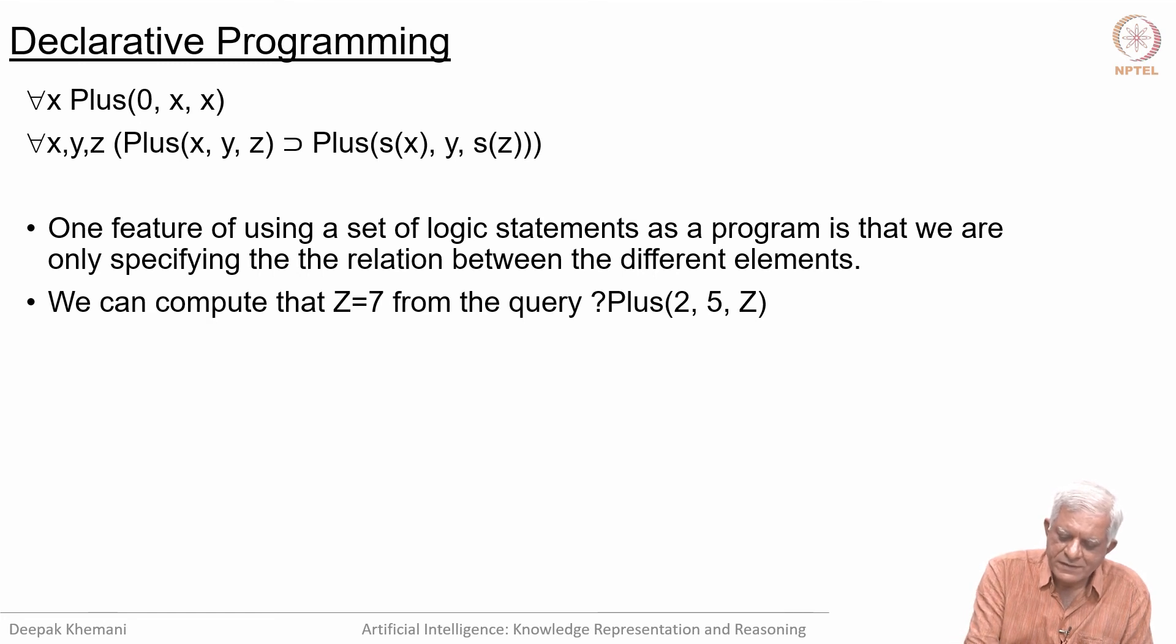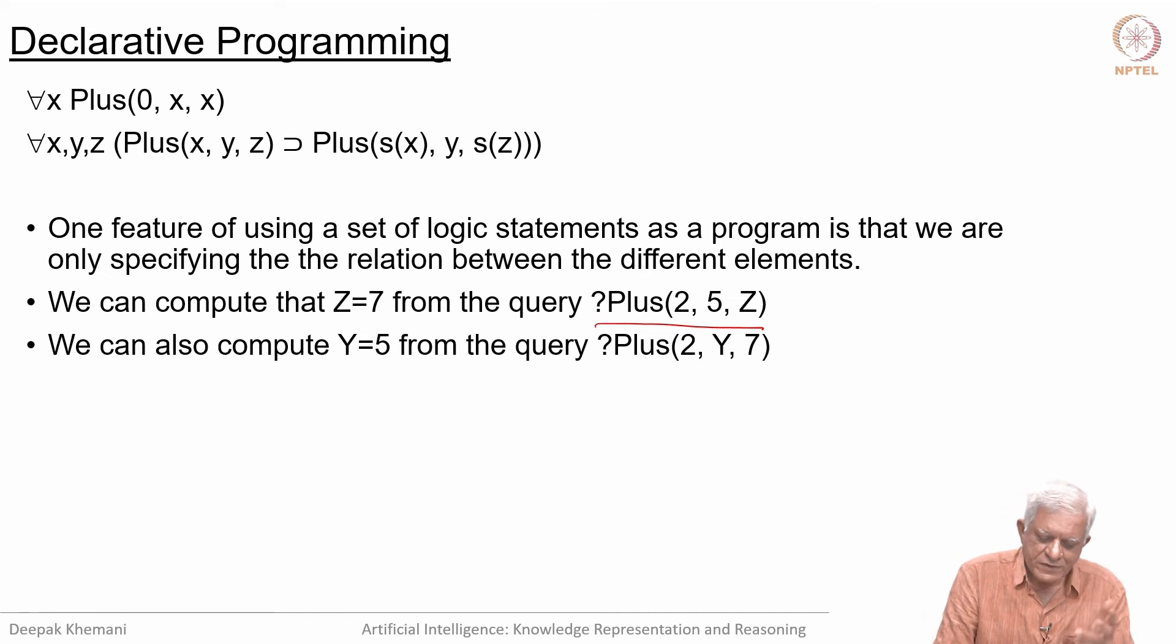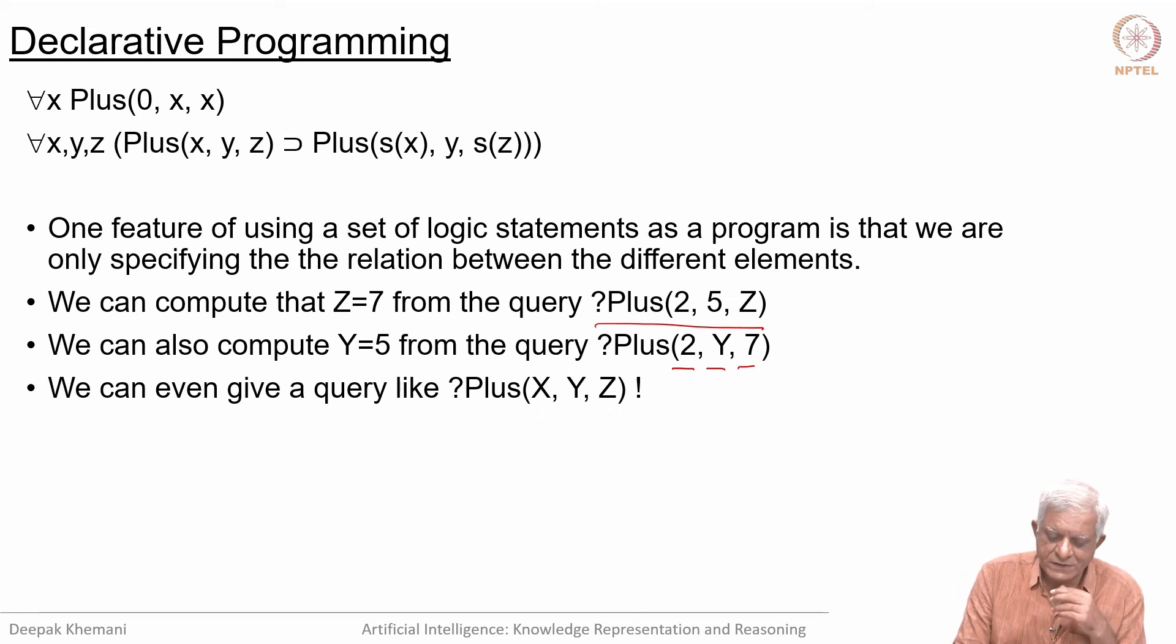A plus point of that is as follows: what we showed earlier is that we can compute Z from the query Plus(2, 5, z), that if you add 2 to 5 what will you get. But you could also compute Y from the query that if you add 2 to something then you should get 7, what is that something? You will get the answer Y is equal to 5. The same program, same piece of code, can be used to do addition as well as subtraction.